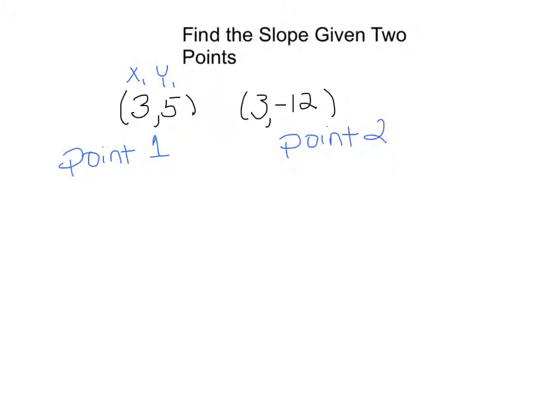Now the only way you can mess this up is by saying x₁, y₂. These both have to be one number. It doesn't matter whether they're both 1's or they're both 2's, but they both have to be the same thing. Now come over here, this is x₂ and y₂, and then we can write our formula.